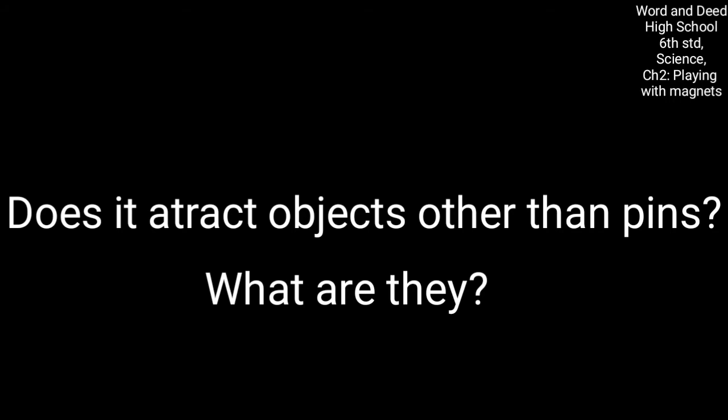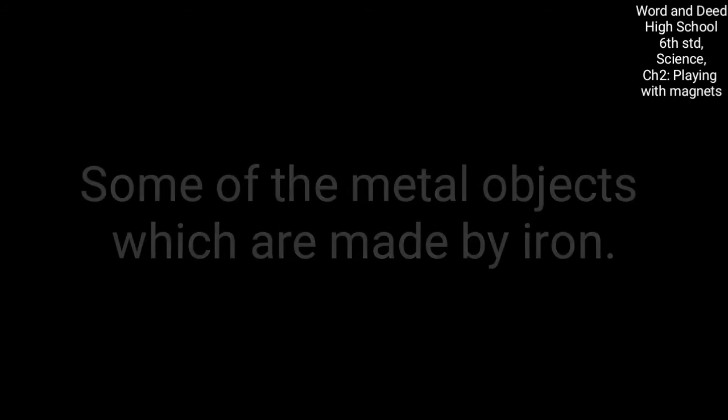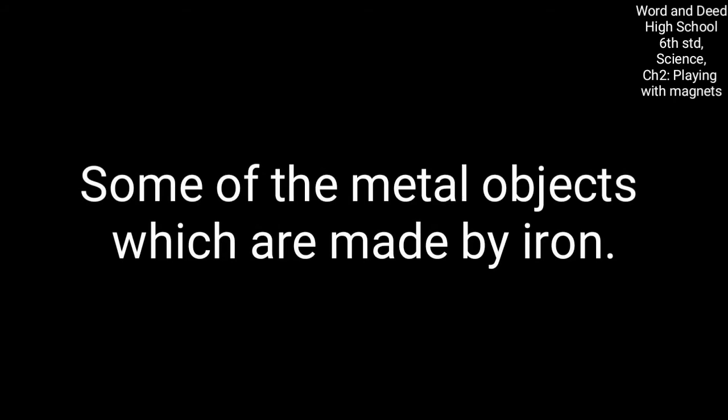It attracts other than pins like nails and other things that you can guess. What are the things attracted by this magnet? Nails and safety pins. And what else? Can you guess? And finally, you can understand the metal things. Metal things get attracted by the magnet, especially in metals that are made by iron. They are attracted by this magnet, that you can understand.